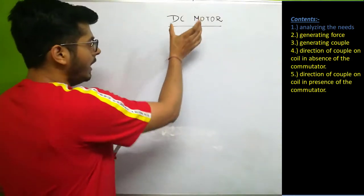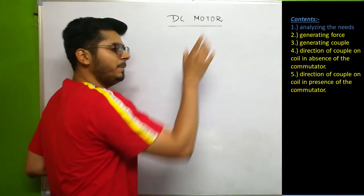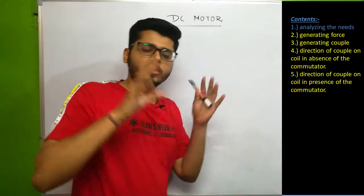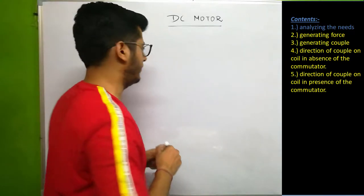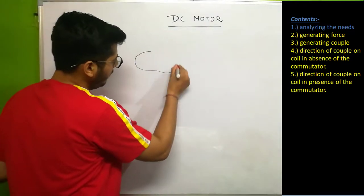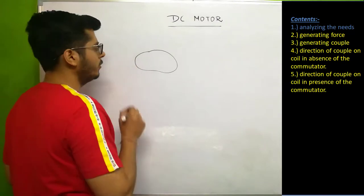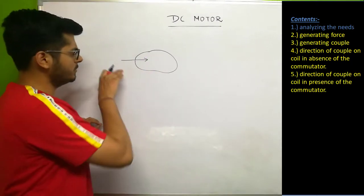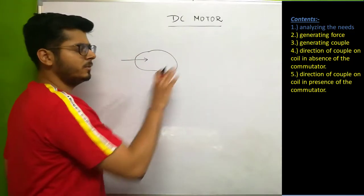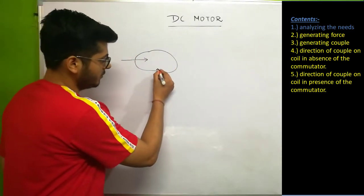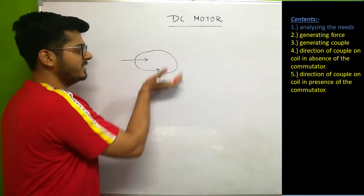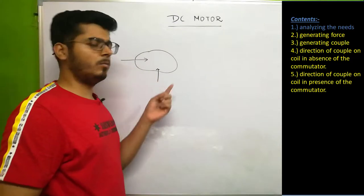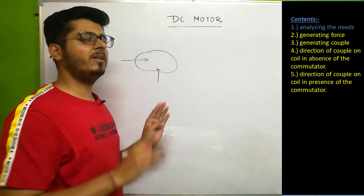If you want to create a motor — something that can rotate — what should be the first requirement? Let's say there is a body and we want it to rotate. Will it rotate under the action of a single force? No, because that force just tries to move the body in one direction. These random forces will not rotate the body; they will push or pull it but will not rotate it.